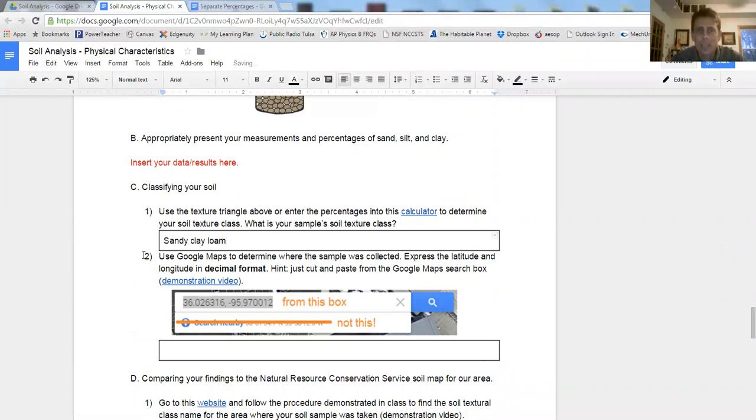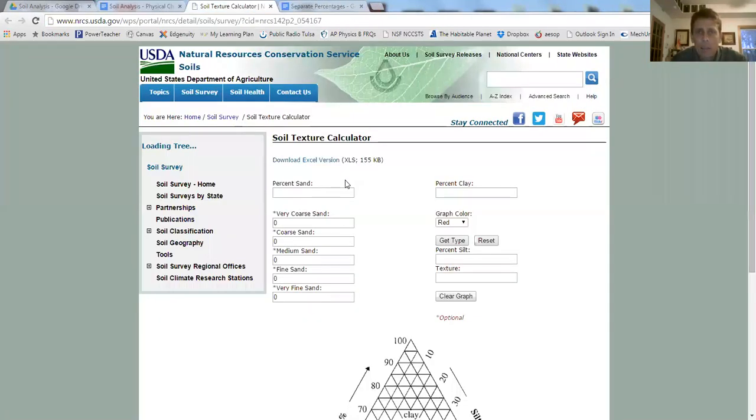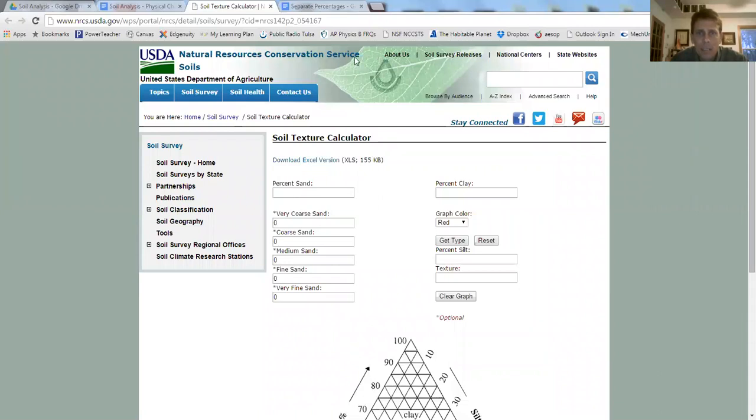And then just to check that, I go to my calculator from the USDA and I use my values. For this right here, we didn't go over which type of sand it was. So we could have spent some time doing that, but for our activity we didn't do that. And also the color, this is just the color that it's going to show up down on the graph.